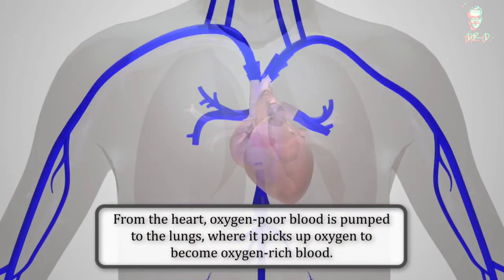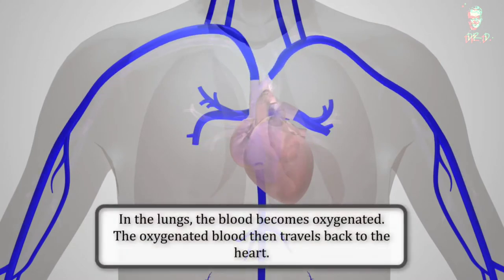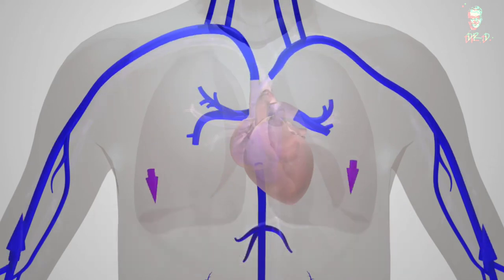The right ventricle pumps the oxygen-poor blood to the lungs through the pulmonary valve. Arterial blood flow velocities ranging from 4.9 to 19 centimeters per second were measured.